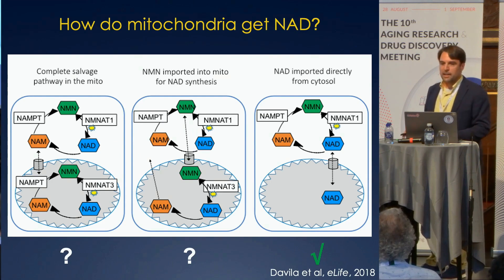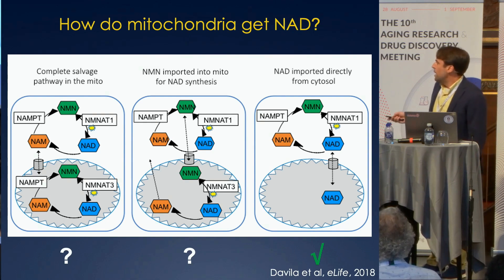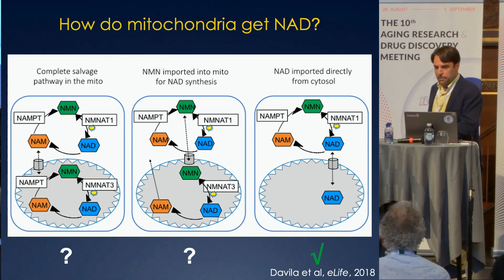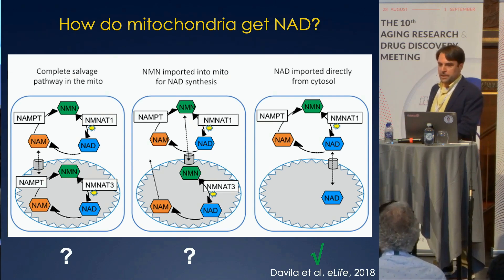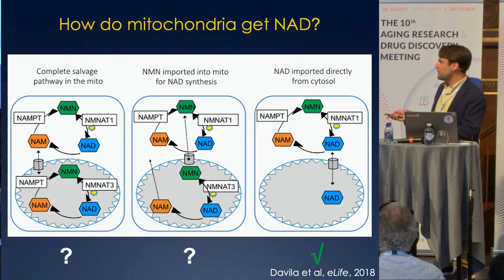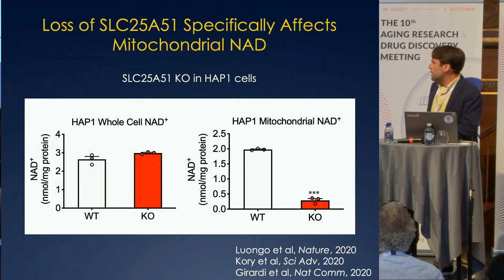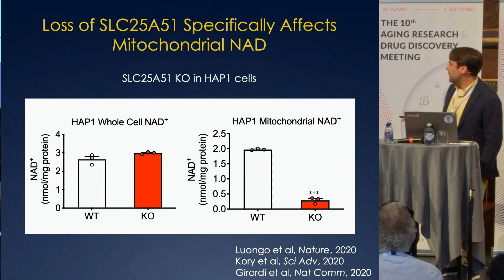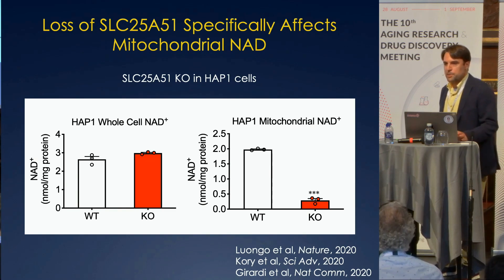Based on that line of thinking, we got interested a few years back in understanding how mitochondria get NAD. At the time, there were three ideas in the field: either that mitochondria completely synthesize their own NAD, that they take up nicotinamide mononucleotide as an intermediate and complete the synthesis, or that they directly import NAD from the cytosol. We were able to show with tracer studies that at least this third pathway exists and seems to be critical for many cell types. In 2020, we, along with Nora Corey's group and the Sepertifurga group here in Europe, simultaneously reported that SLC25A51 is that mitochondrial NAD transporter in mammalian cells.